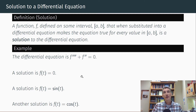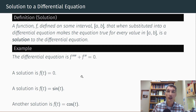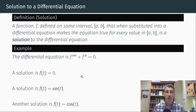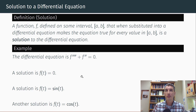You might also guess that cosine works: the fourth derivative of cosine is cosine, and the second derivative of cosine is negative cosine, so cosine plus negative cosine equals zero. So that's just a quick introduction to some of the main ideas we're going to be tackling in class. I look forward to seeing you there.